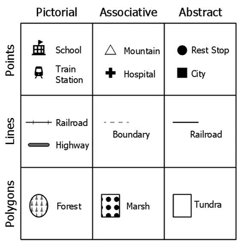A red rose may symbolize love and compassion. The variable x, in a mathematical equation, may symbolize the position of a particle in space. In cartography, an organized collection of symbols forms a legend for a map.